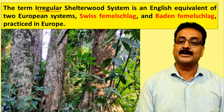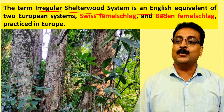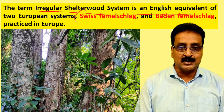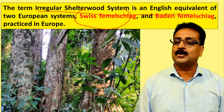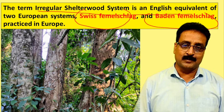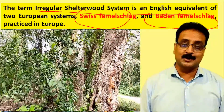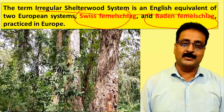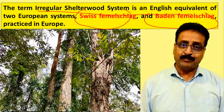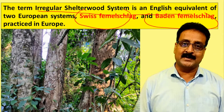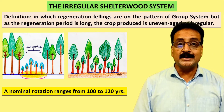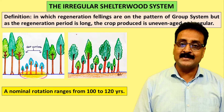The term 'irregular shelter wood system' is the equivalent of two European systems: one is called Swiss Femal Slag and the other is called Baden Femal Slag, practiced in Europe. It has been evolved in Europe but can be practiced anywhere wherever the species demand that type of silviculture.